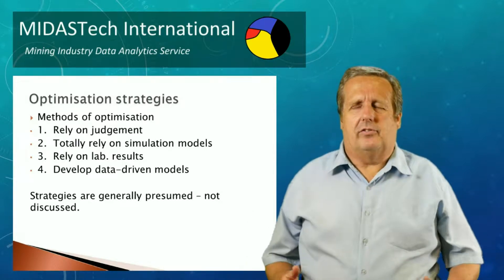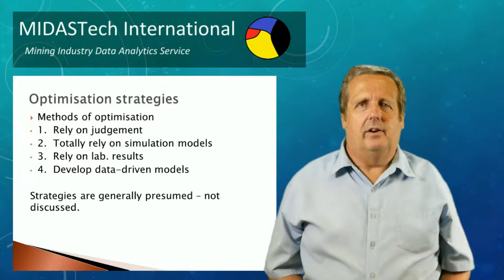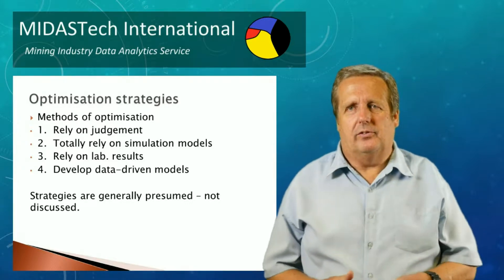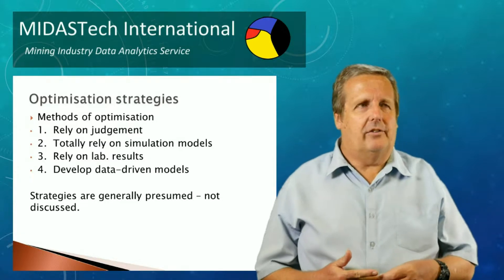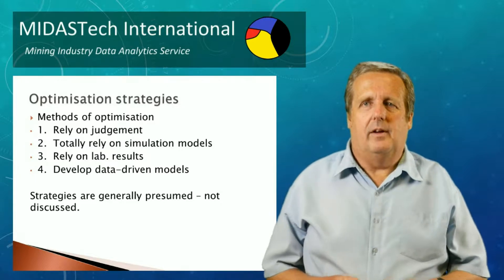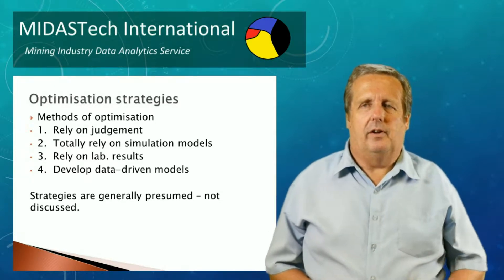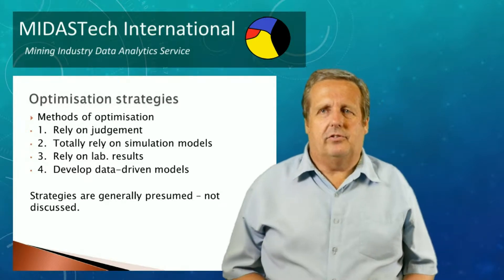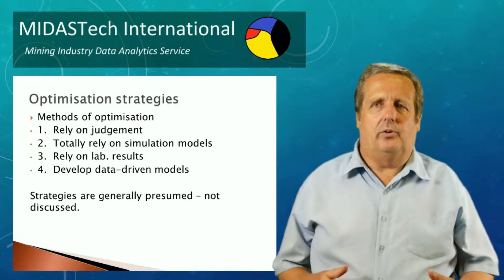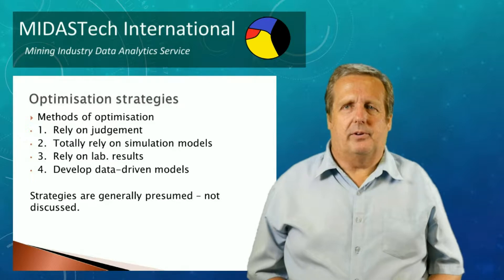In order to use the simulator we need unit models as well as the ore properties. There are many strategies companies use to optimise plants. Four approaches are: one, rely on judgement — don't use data or quantitative methods, use consultants; two, totally rely on the accuracy of already-defined models without measuring plant data; three, also rely heavily on lab results due to the weakness in available models; and four, construct data-driven models from the plant data itself, also called machine learning algorithms — and this is what we're discussing in this presentation.